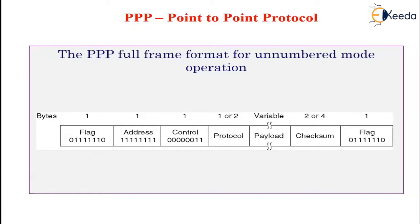The PPP frame format was chosen to closely resemble the HDLC frame format. The major difference between PPP and HDLC is that PPP is character oriented rather than bit oriented. In particular, PPP uses byte stuffing on dial-up modem lines, so all frames are an integral number of bytes. PPP frames can also be sent over SONET or 2-bit oriented HDLC lines. The PPP frame format is shown in the figure.